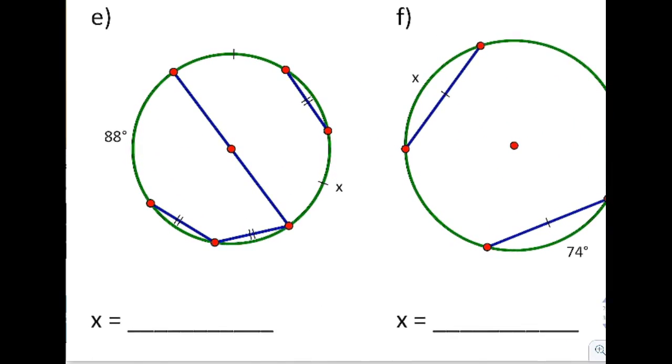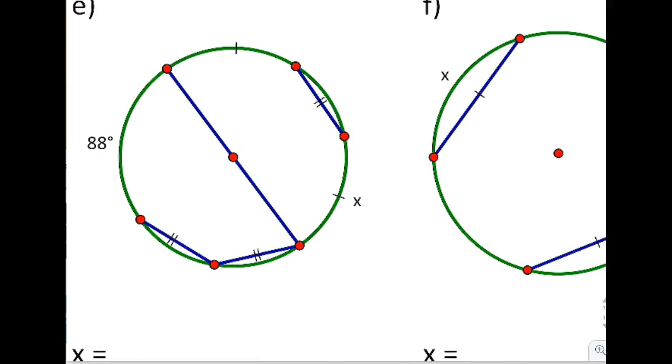Question E looks a little confusing because there are two different size things going on. This, this, and this are all the same. And it also tells us that this arc and this arc are the same. Three equal chords and two equal arcs.